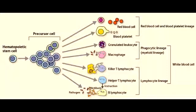Name all the cells of the myeloid lineage. All the cells of the myeloid lineage include all the granulated leukocytes and macrophages. The cells of the red blood cell lineage include red blood cells and blood platelets.